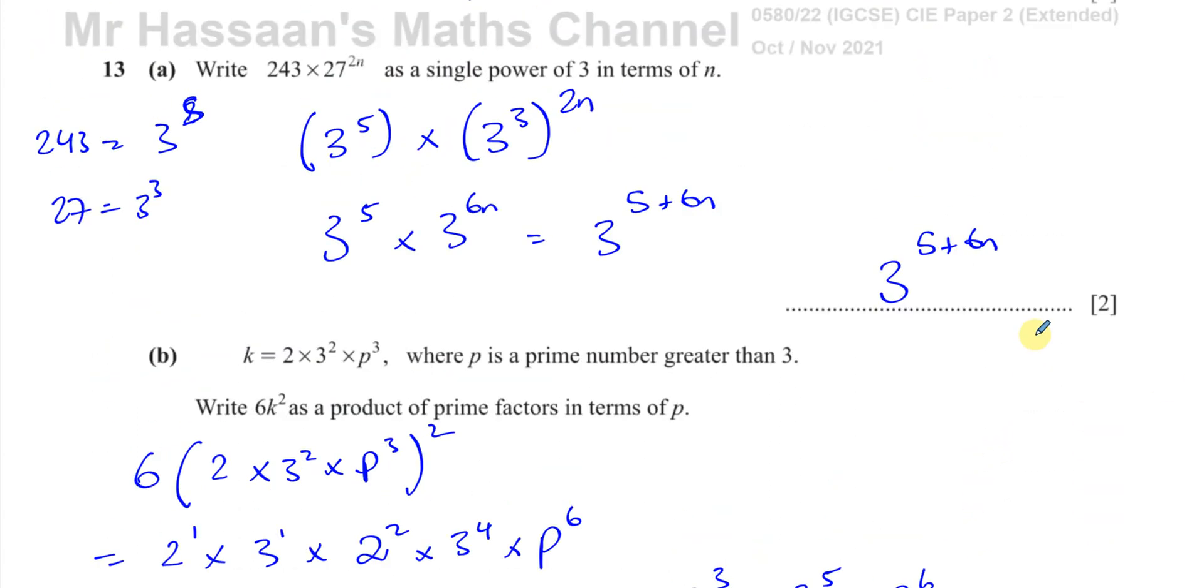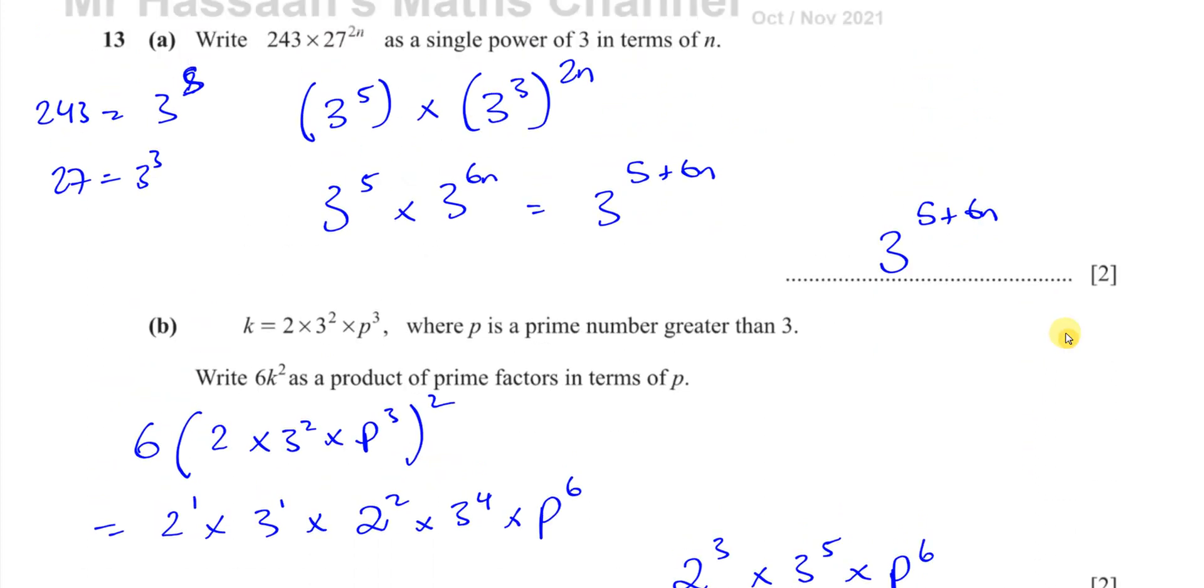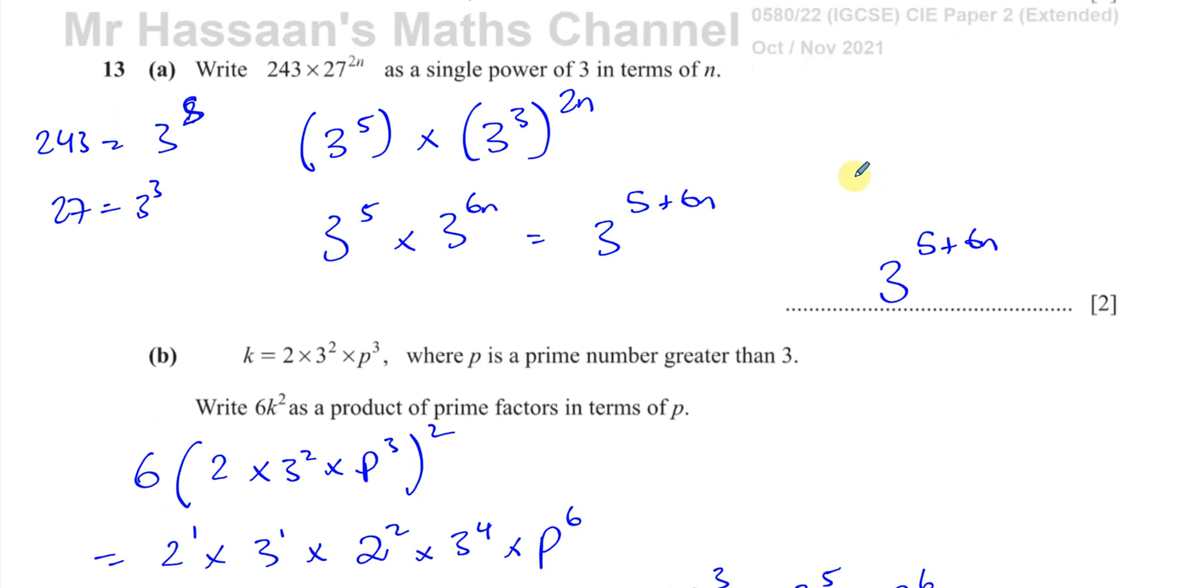That's the answer to question number 13, a and b. I hope that was clear. Other questions about indices and prime numbers and prime factors can be found in the playlist that I'll put in these places here. You can subscribe to my channel over here and you can go to other questions from this particular paper, which is paper 2, variant 2 from October 2021 from the Cambridge IGCSE syllabus from the link over here. Thank you for watching and see you soon.